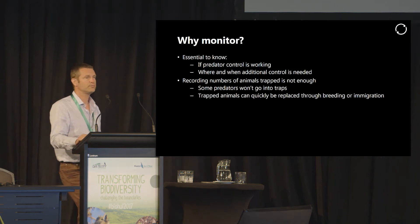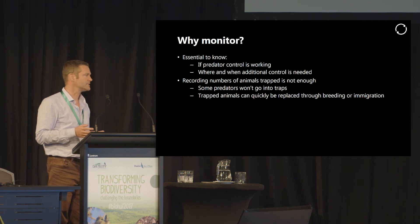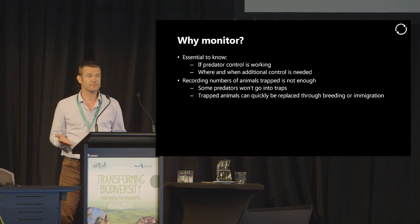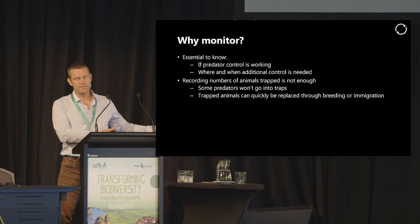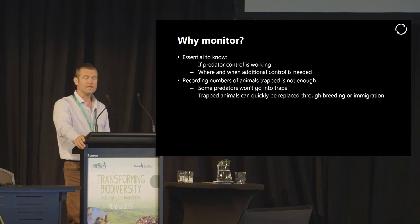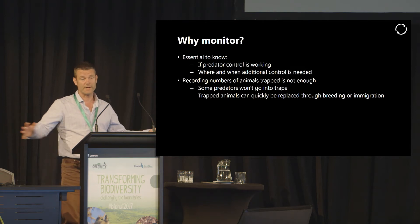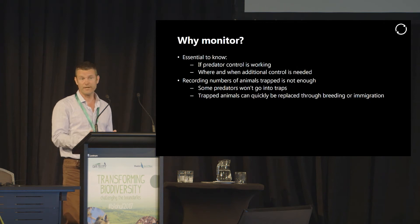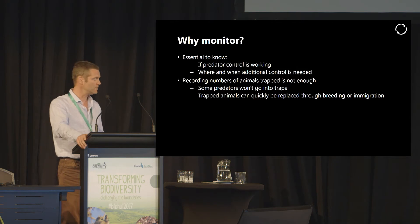Often a lot of predator control programs simply monitor the numbers of animals caught in kill traps, but that's not really enough for a couple of reasons. One is that there are some animals out there in the wild that will just never enter a trap, so recording how many you've caught tells you how many you've caught — it doesn't tell you how many are still left in the landscape. And even the animals that you do catch can be quickly replaced by immigration from outside your control area or by breeding from the surviving animals, so even if you're taking out large numbers it doesn't necessarily follow that you are actually reducing the population to any meaningful degree.